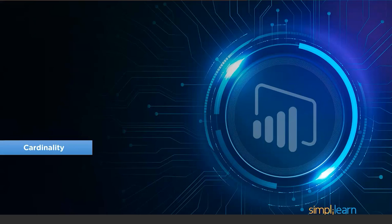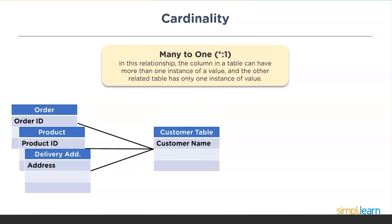Now coming to the next important factor: cardinality. Before I start playing around with data and showing you relationships, it's important to understand the four types of cardinalities. One is many-to-one — many orders contain data of one customer, so per order one customer is there. From customer to order or product or delivery address, it's a one-to-many relationship, and from order to customer it's many-to-one.